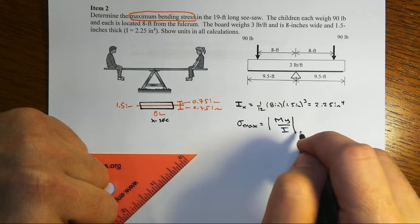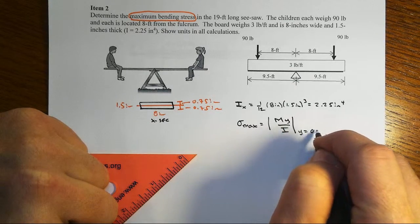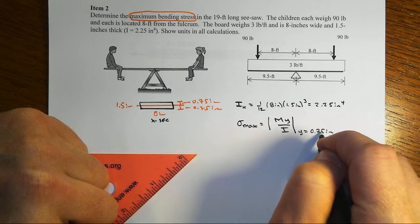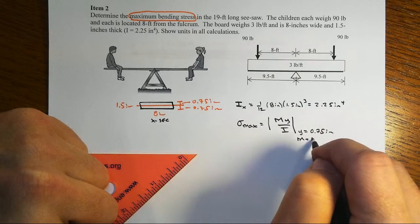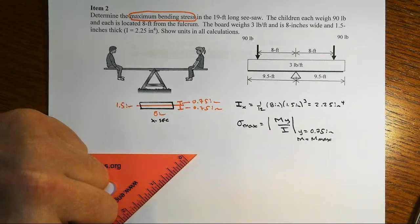means we need to go to the outer fiber, so we need y to equal 0.75 inches, top or bottom, doesn't really matter here. And of course we need the moment to be at its maximum value.